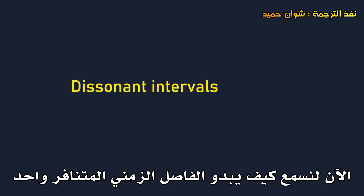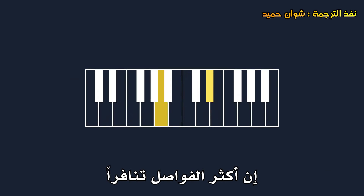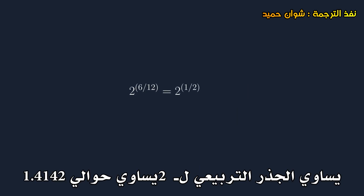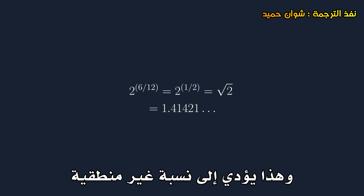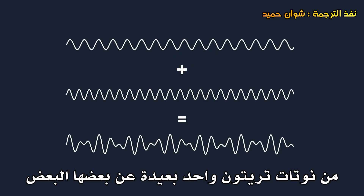Now, let's hear what a dissonant interval sounds like — one where the notes sound like they disagree with each other. The most dissonant interval is arguably the tritone, which is 6 semitones. 2 to the power of 6 over 12, or 1/2, is just the square root of 2, equal to about 1.4142. This results in an irrational ratio which isn't close to any simple ratio, resulting in a very irregular pattern when the waves of notes one tritone apart are added together.